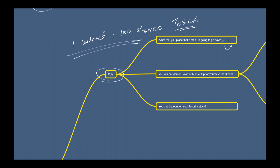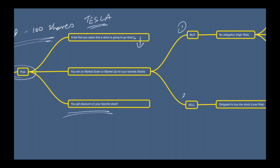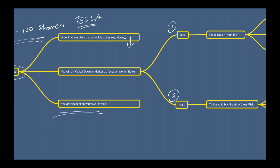One of the good points about puts is that you win on market down, or on market up, and I'll explain why in a second. Also, you get a discount on your favorite stock — that's my best point for doing puts. You can do two things: you can buy a put or you can sell a put. I don't buy puts because I'm not interested in companies going down. You sell a put when you think the company is going to go up.